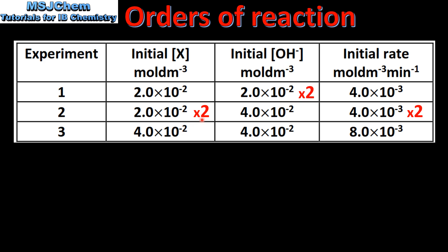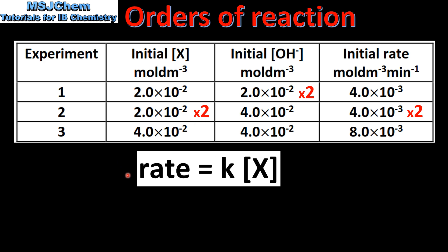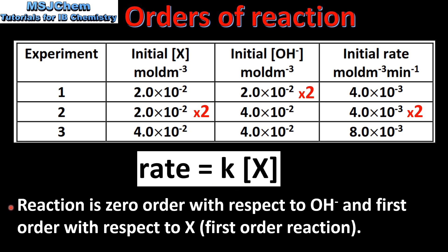Next we look at the effect of doubling the concentration of X in experiments 2 and 3. By doubling the concentration of X the rate of reaction has also doubled, telling us the reaction is first order with respect to X. Here is the rate expression: because the reaction is zero order with respect to OH⁻ it doesn't appear in the rate expression. So the reaction is zero order with respect to OH⁻ and first order with respect to X — overall it is a first order reaction.